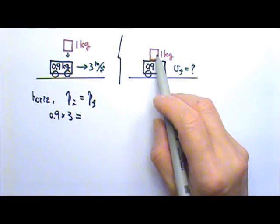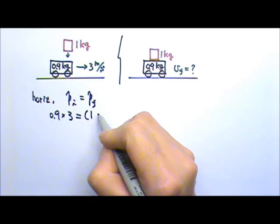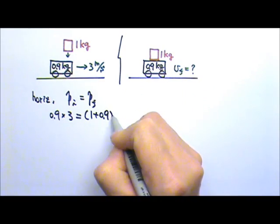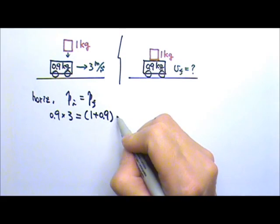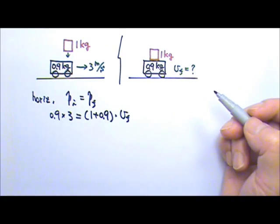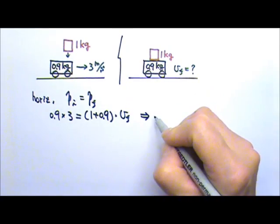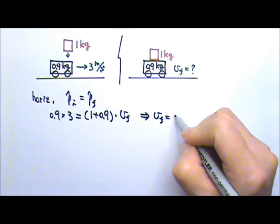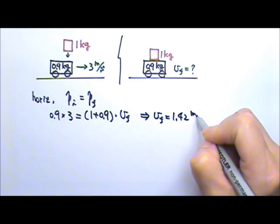Afterwards, they are stuck together so they have the same final velocity. They move together, 1.9 kilograms, and they move with this final velocity we do not know. So we solve this equation, we get the final velocity to be 1.42 meters per second.